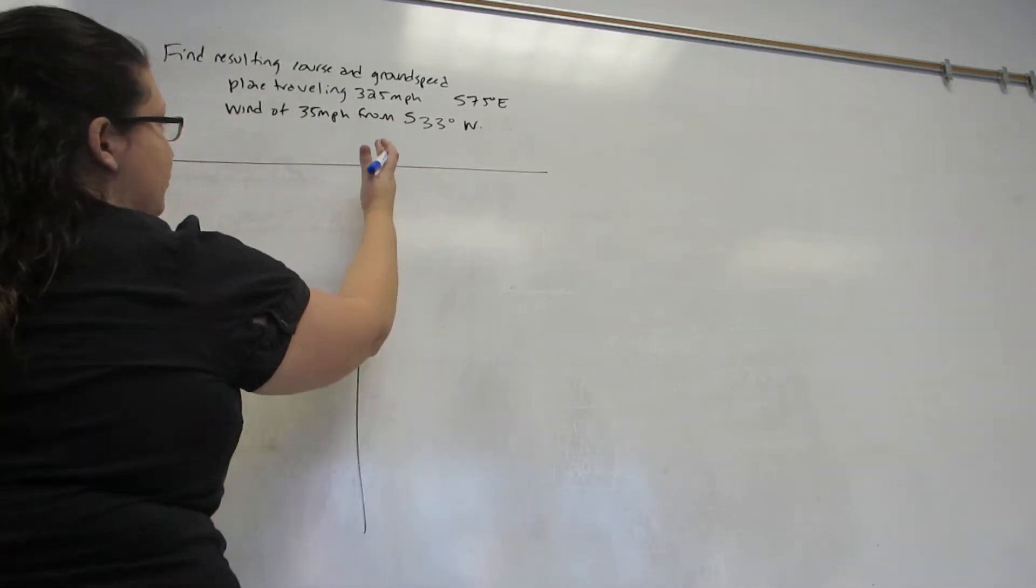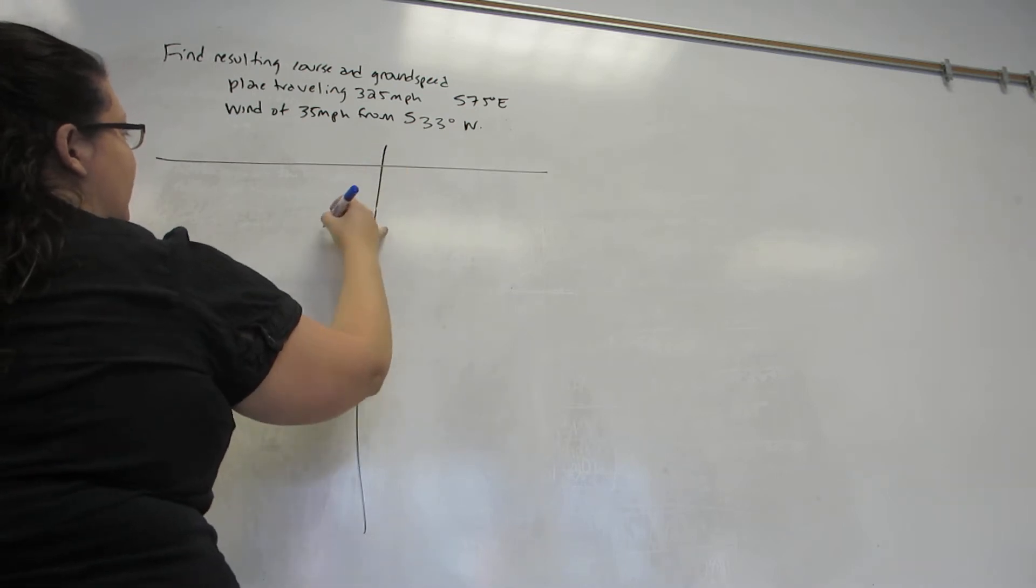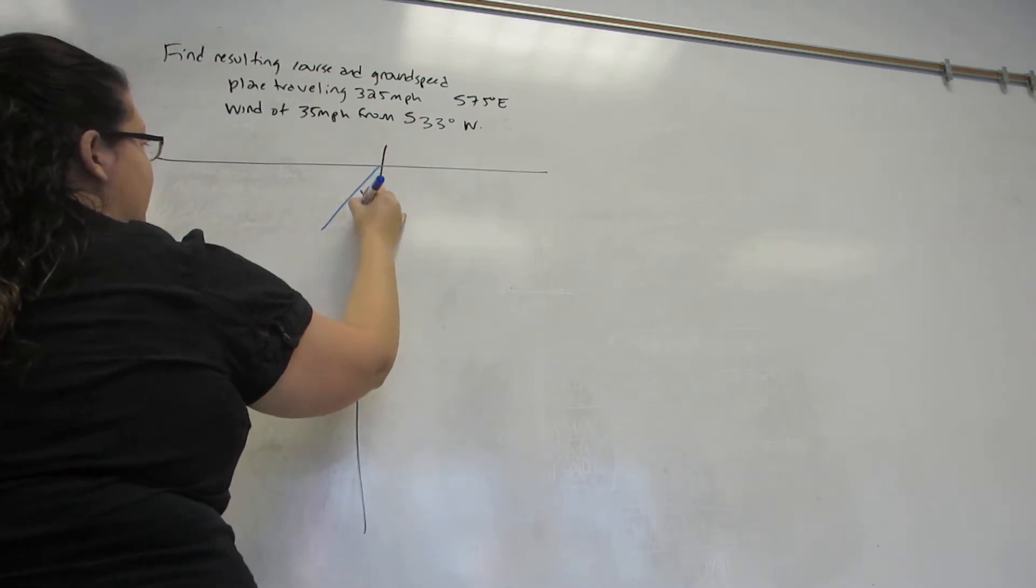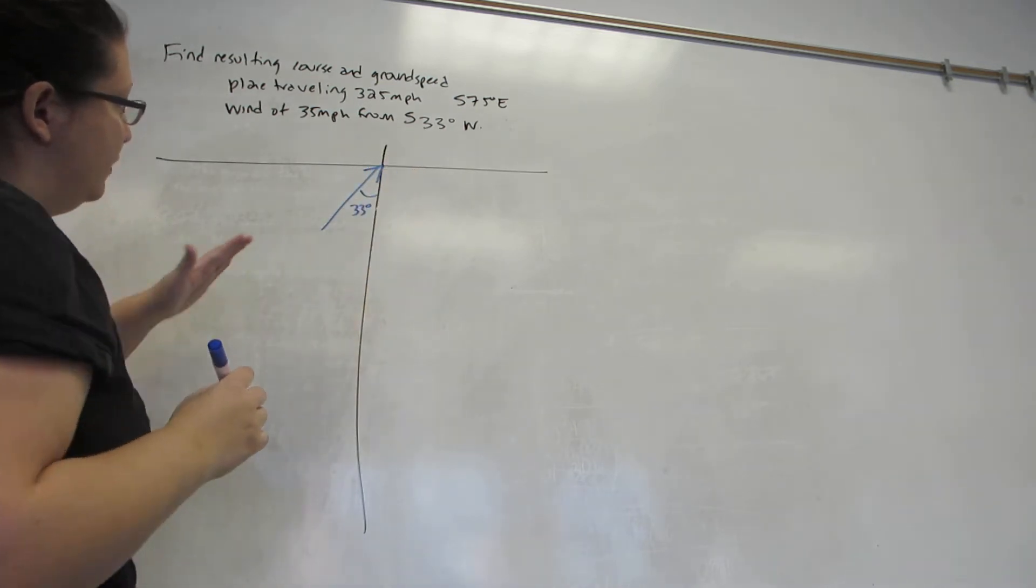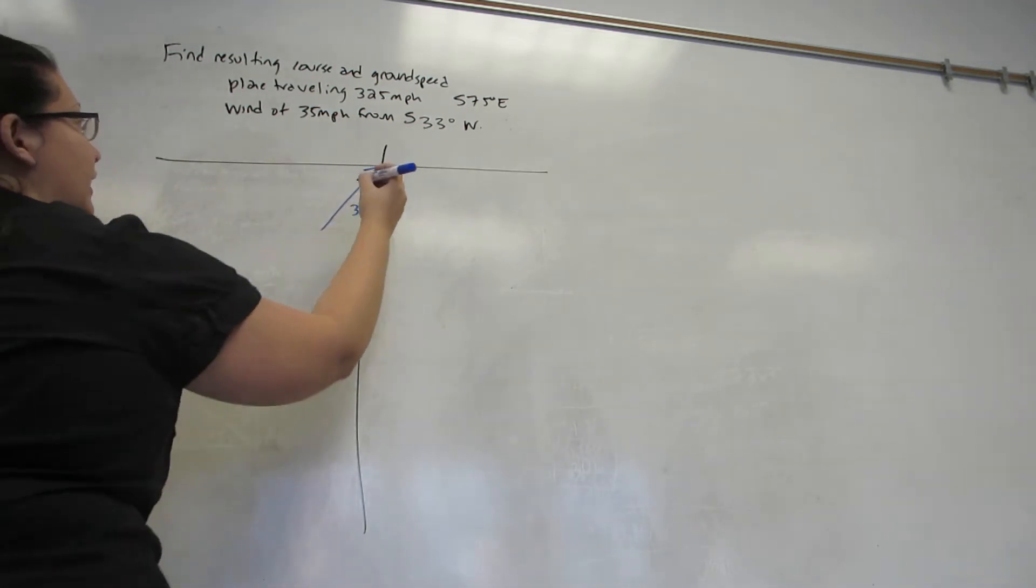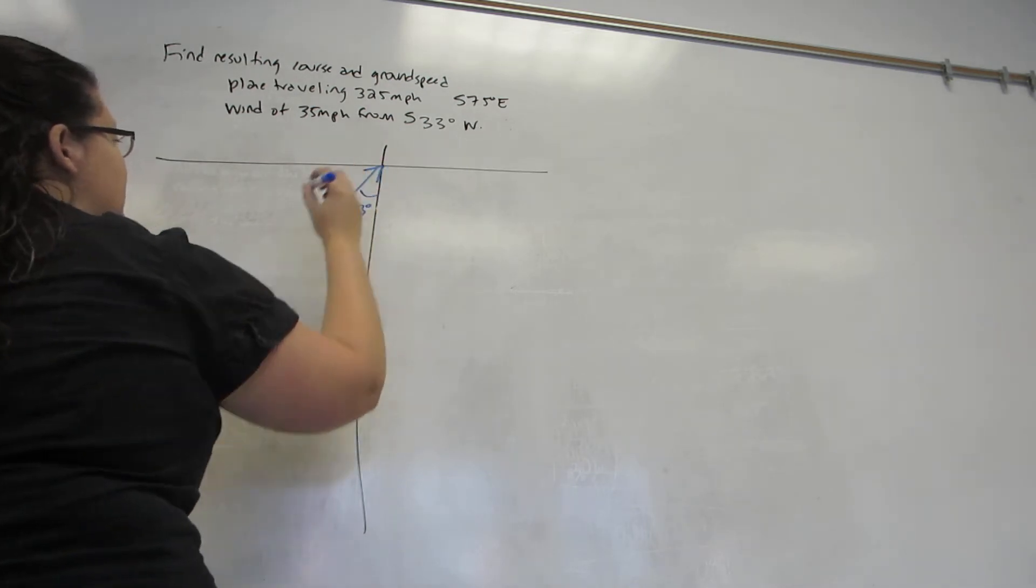I start with its direction, which is start at south and go 33 degrees towards west. The wind is blowing from, so it must be going towards the origin, and the length of this vector is the speed of that wind.